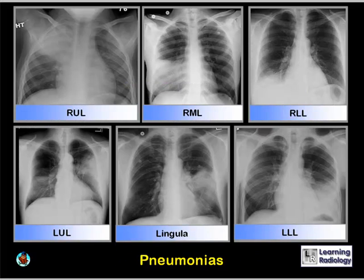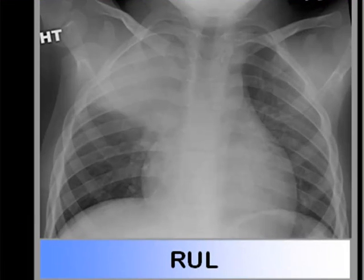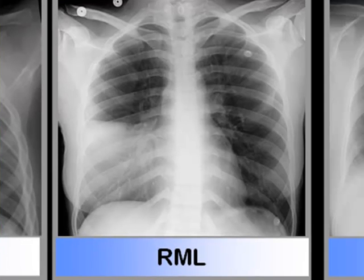Here is a composite slide showing what lobar pneumonias look like in each lobe of the lung. This is a right upper lobe pneumonia — the inferior border is produced by the minor fissure. This is pneumonia in the right middle lobe, where the superior border is produced by the minor fissure and the pneumonia obscures the right heart border.